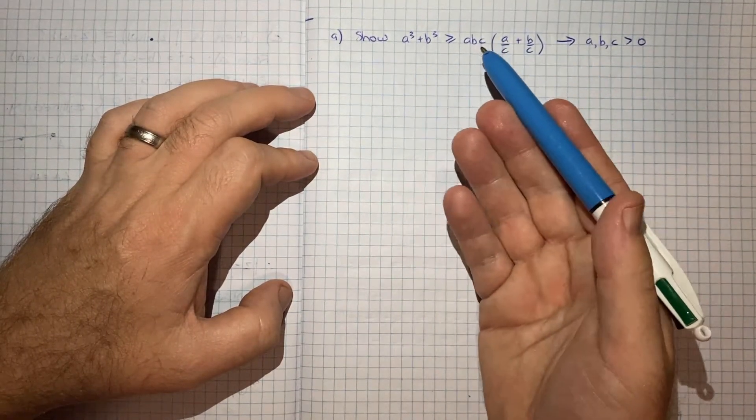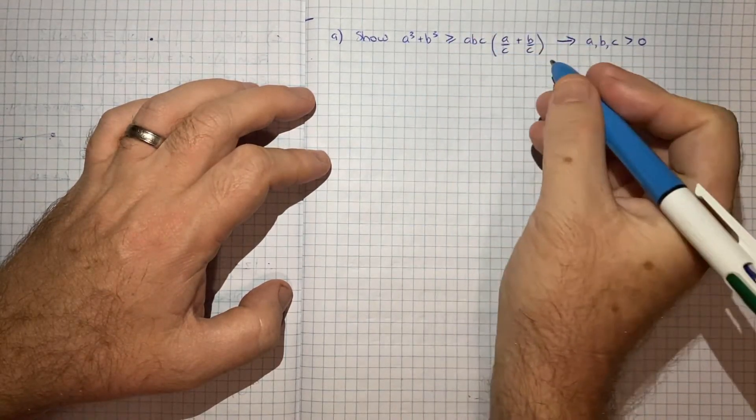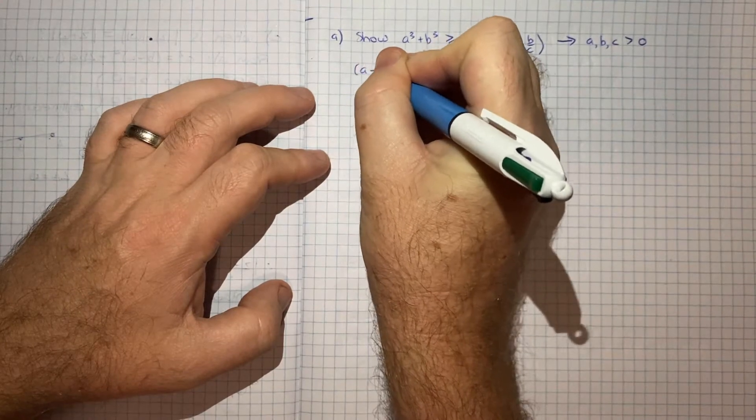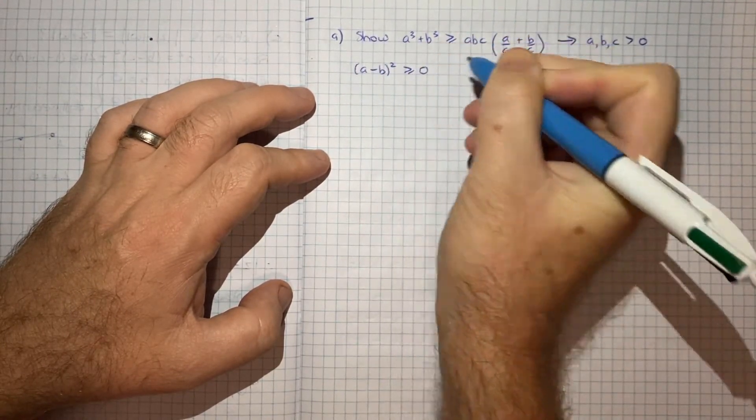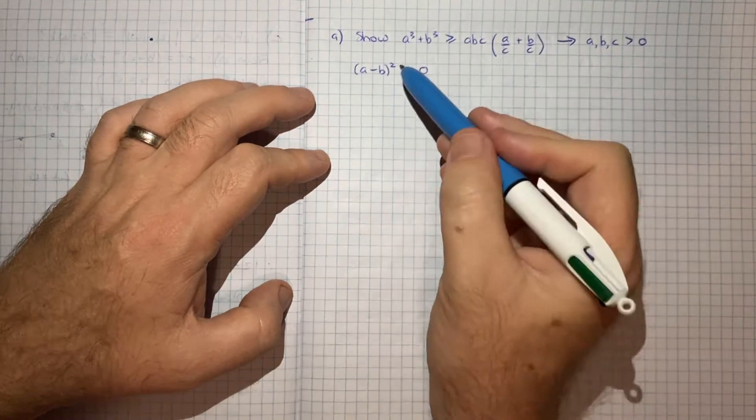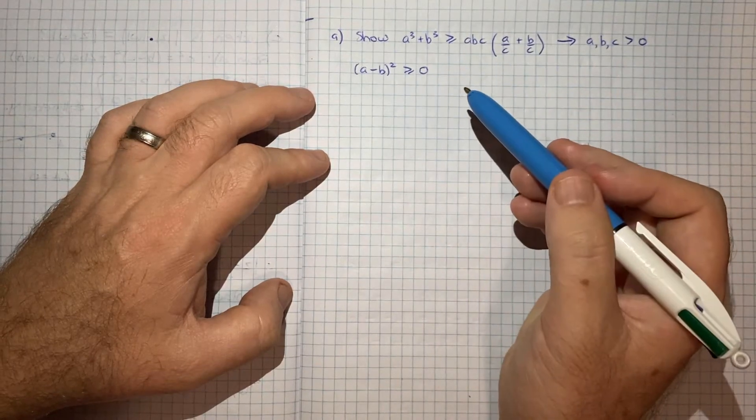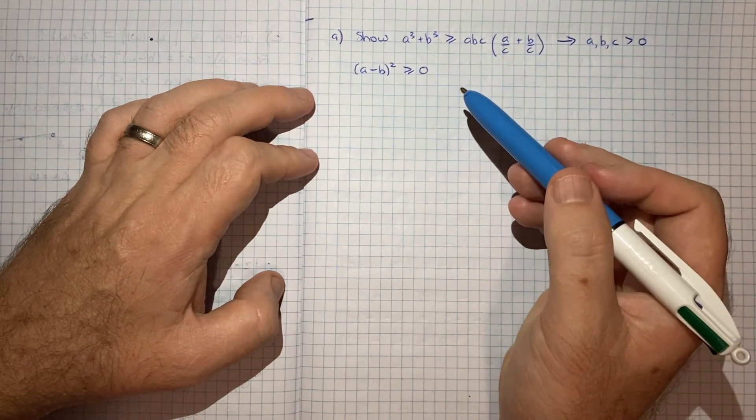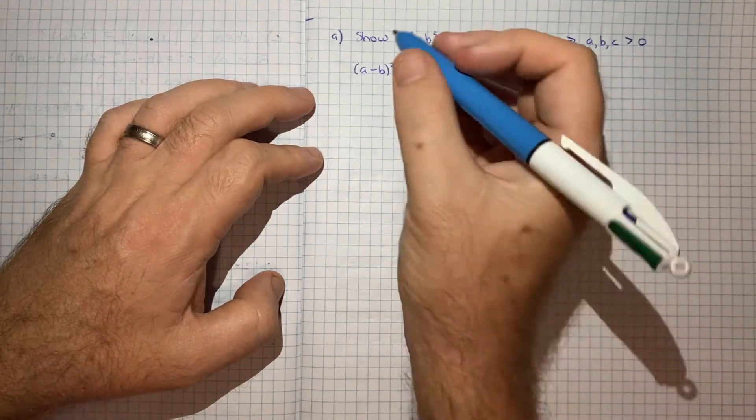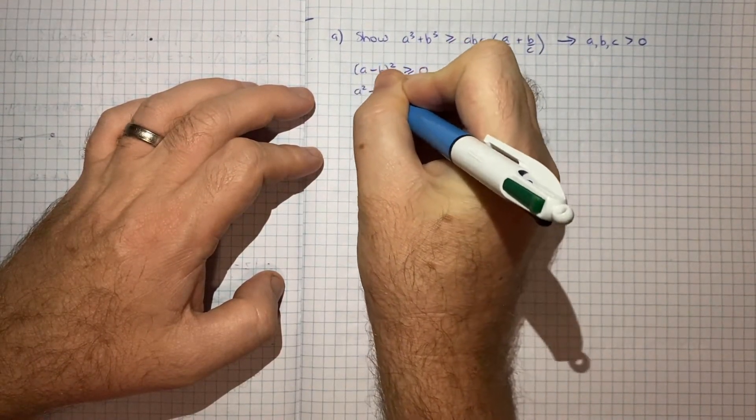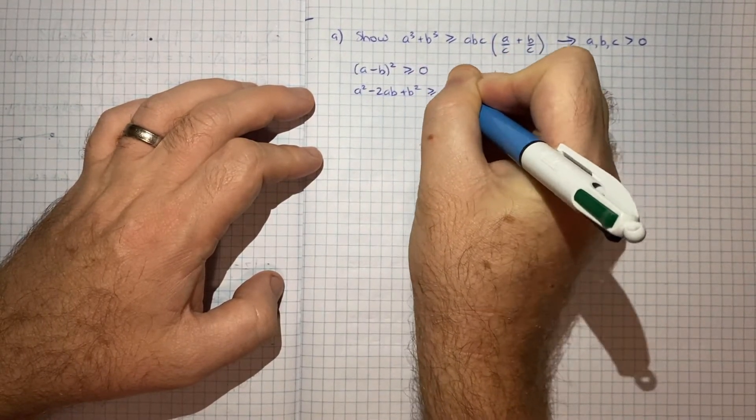Because what we're going to do with this proof is start with something that we know for sure. And something I know for sure is that a minus b squared would be greater than or equal to zero. And I know that for sure, because anything squared, whether it's positive or negative, will end up being greater than or equal to zero. So that's a good starting point. And from there, we can expand this. So we'll go a squared minus twice the product plus b squared would be greater than or equal to zero.